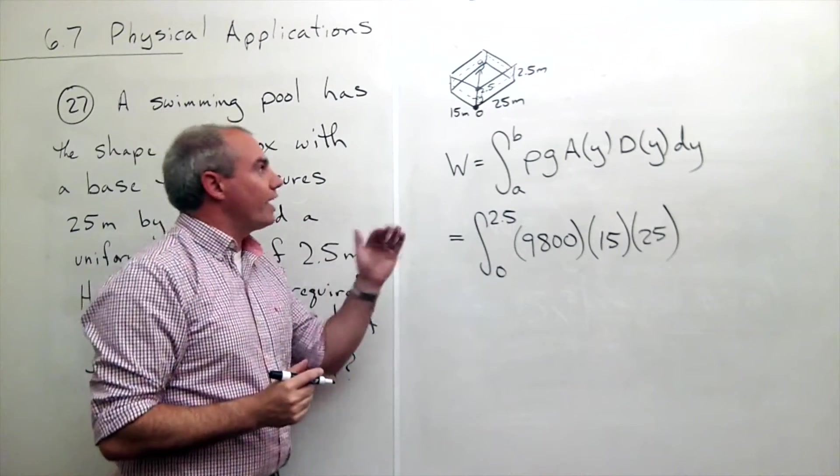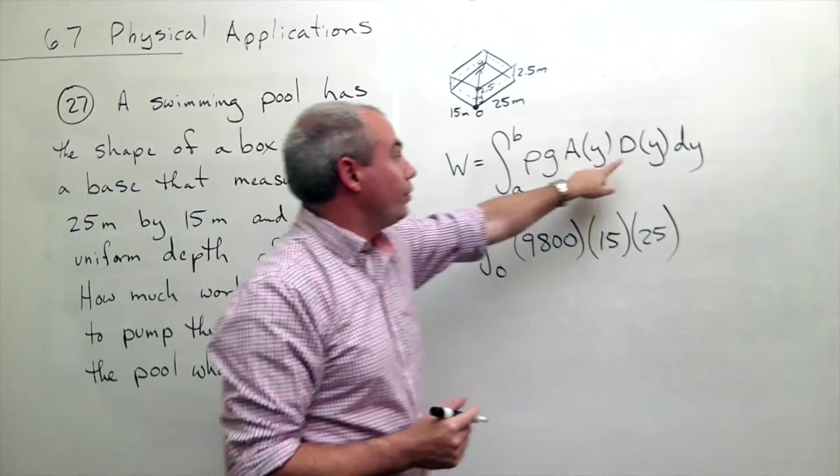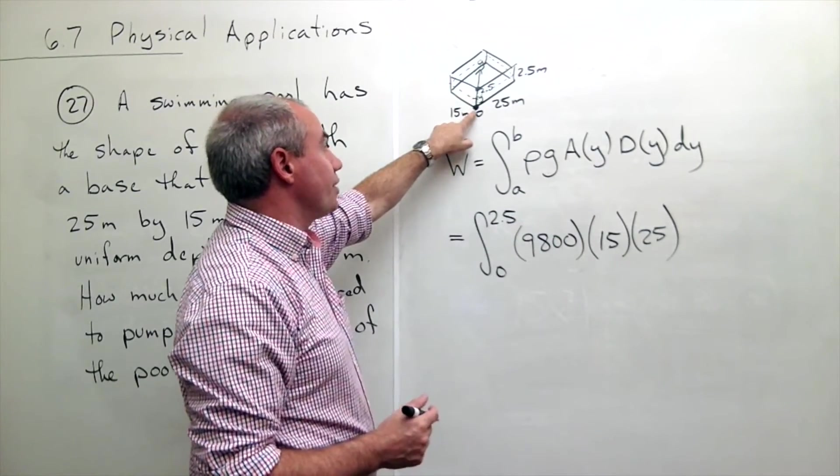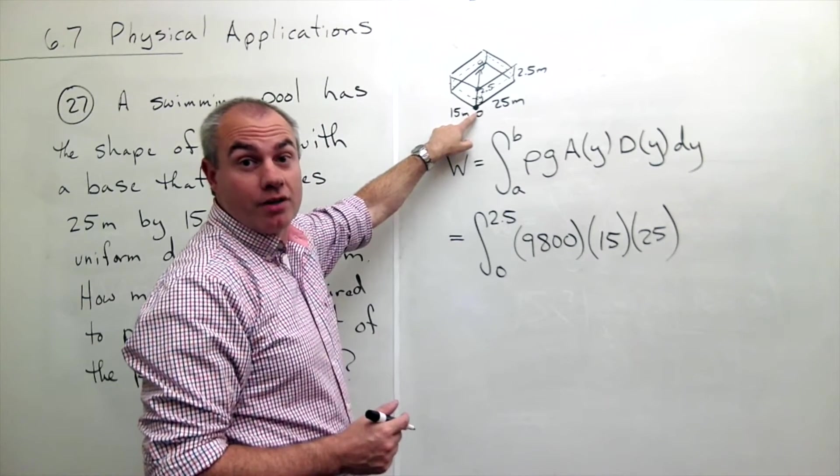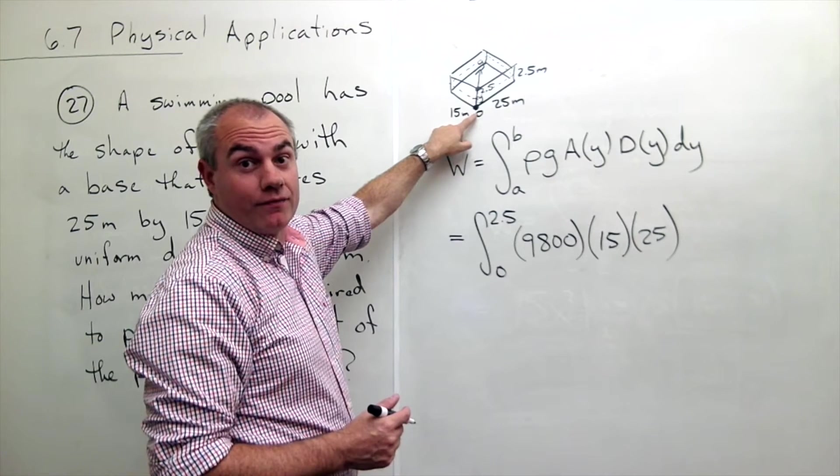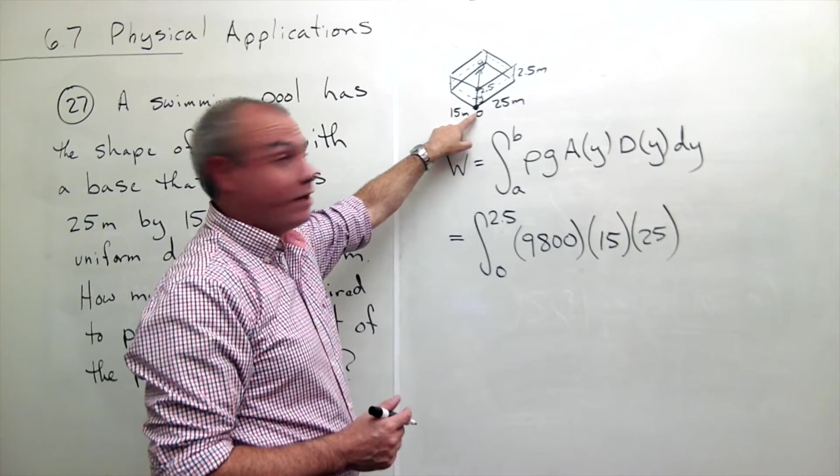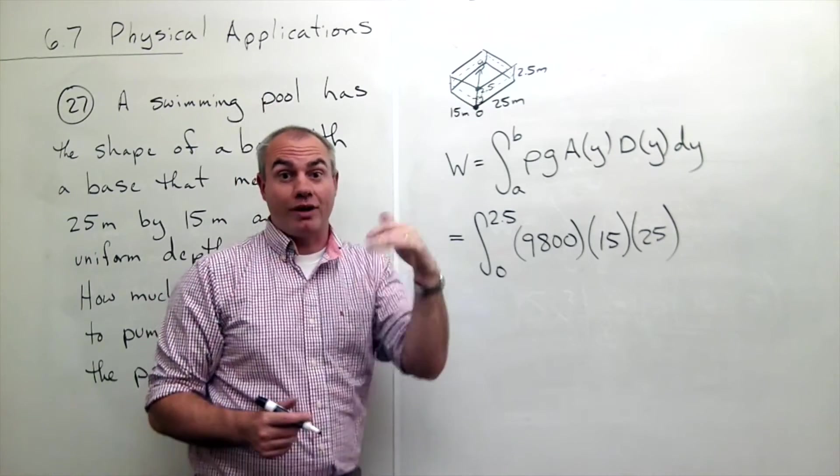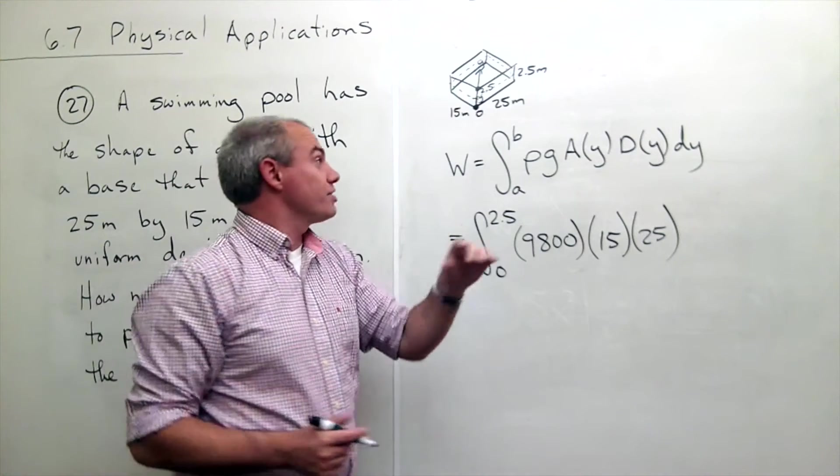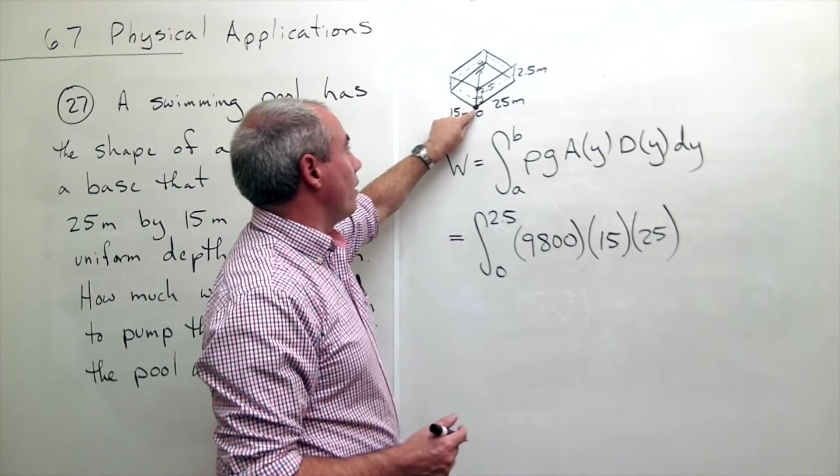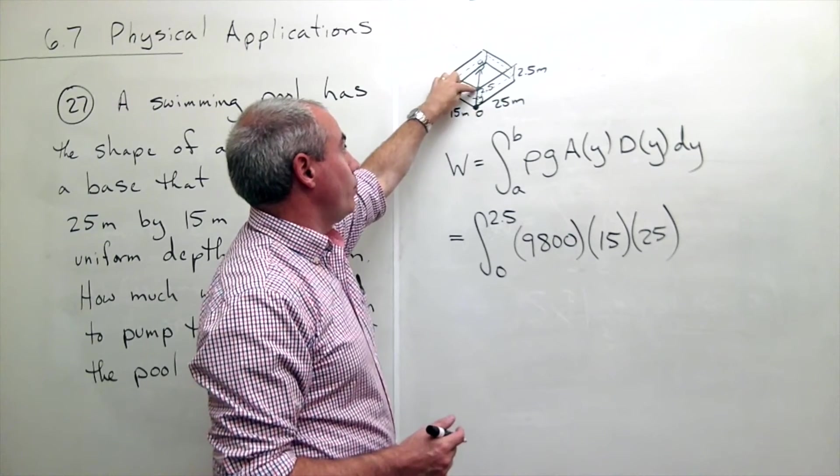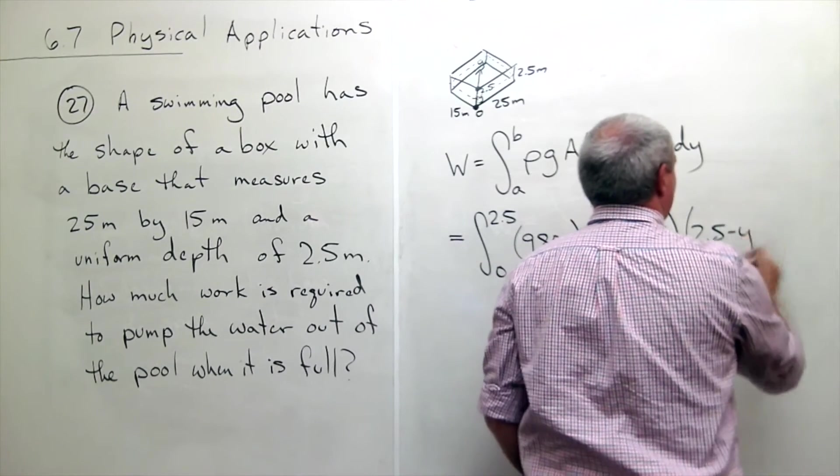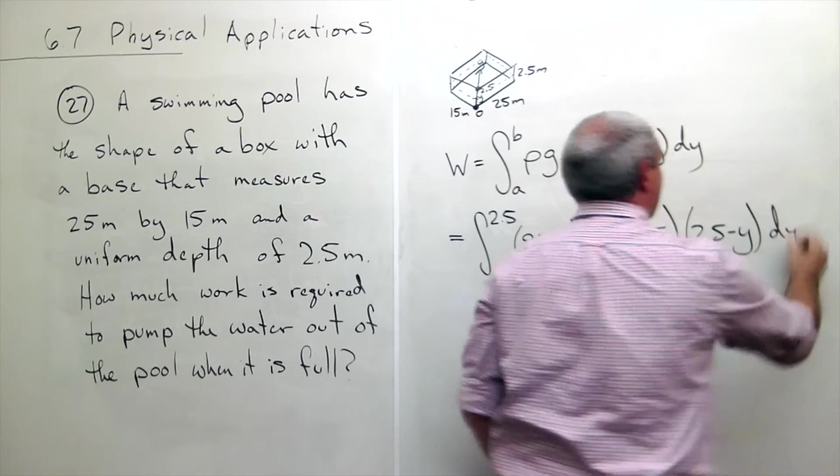And then I need to know, okay, if I'm sitting at a point y, how deep am I in the pool? Well if I'm at a point 0 in the pool, which is at the bottom of the pool, certainly I'm not 0 deep. I'm 2.5 meters deep when I'm at the bottom. And when I'm at the top, or when y is 2.5, I'm not 2.5 deep, I'm 0 deep. So when I'm at 0, my depth is 2.5. When I'm at 2.5, my depth is 0. In other words, my depth is 2.5 minus y. Then I add my dy.